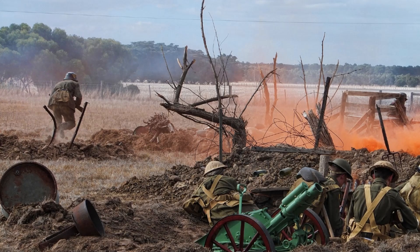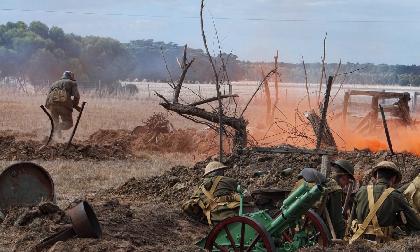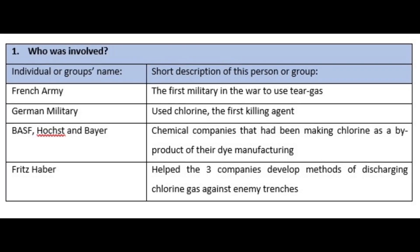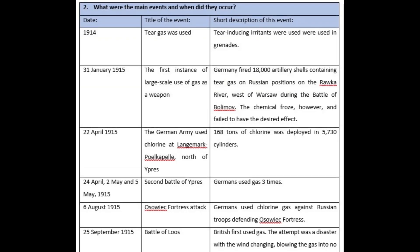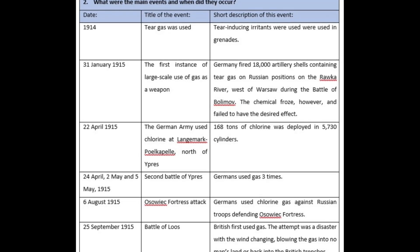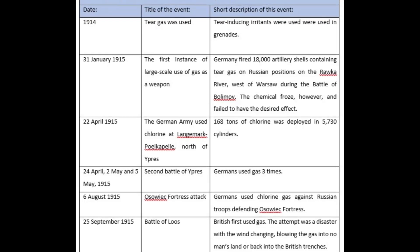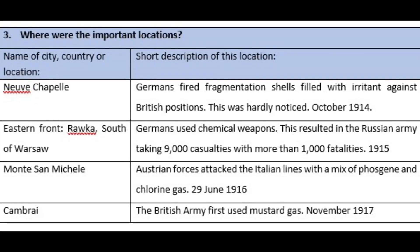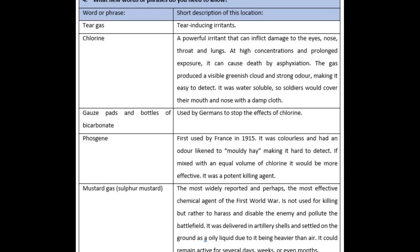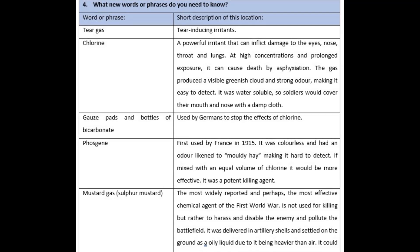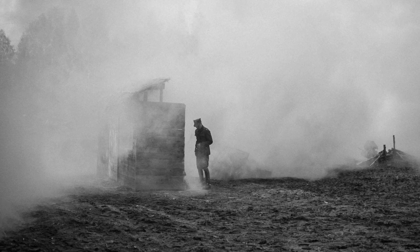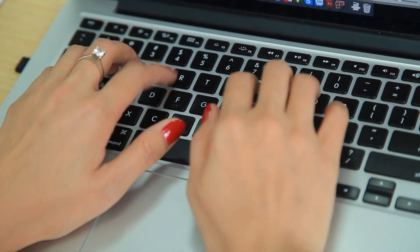Let's have a look at what completed background research should look like. For this example, we are conducting a research task about the role of weaponised gas in the First World War. As part of the background research for this topic, we needed to know who the important people were — we recorded the names of important chemical manufacturers and the main armies that introduced these weapons. We also collected a range of key dates, often with exact days, months, and years of when gas was introduced or was most significant in the conflict. Next we collected a list of the important locations where gases were used or developed. And finally we gathered a list of technological terminology about different gas types, and medical terminology frequently used when describing the impact of gas on people. This background research now provides us with a huge range of subject-specific words that we can use in our historical writing to show that we genuinely understand the topic under investigation.